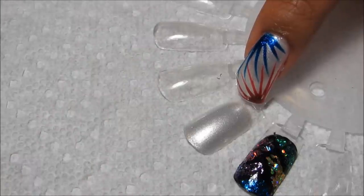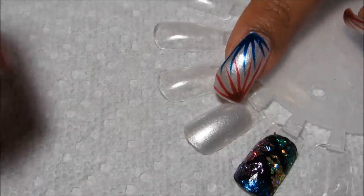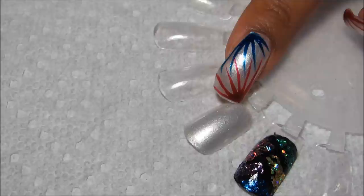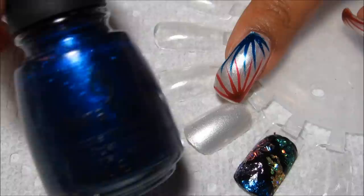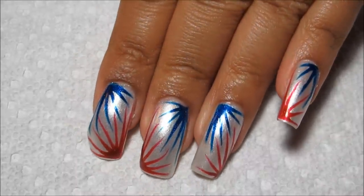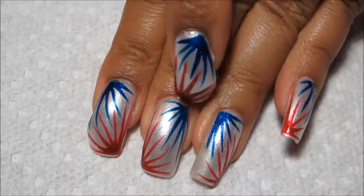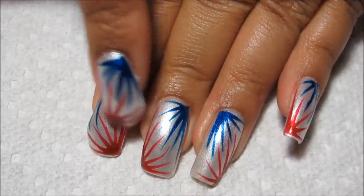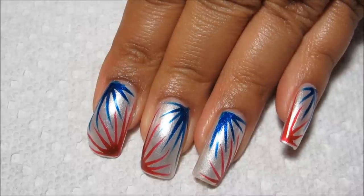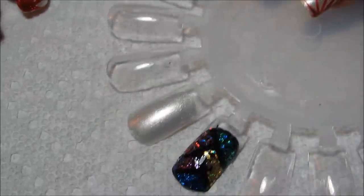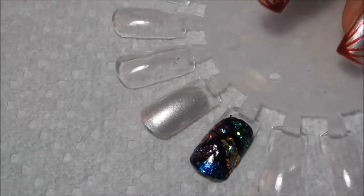And then for the red burst I'm going to be using Zoya Delilah which is this sparkly red and the blue is China Glaze Blue Years Eve which is the sparkly blue. And as far as the placement goes you can see on my own nails I have it so that the blues are kind of bursting out of the same area and the red is kind of bursting out of the same area. You can do that same sort of pattern or you can place them randomly.